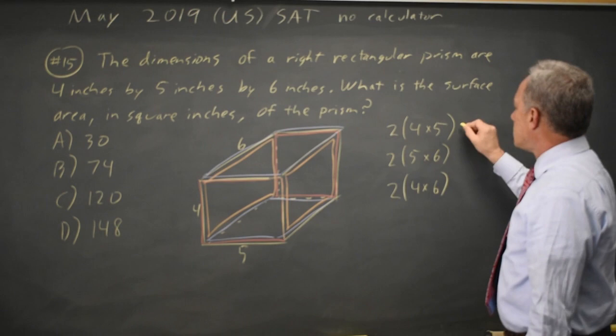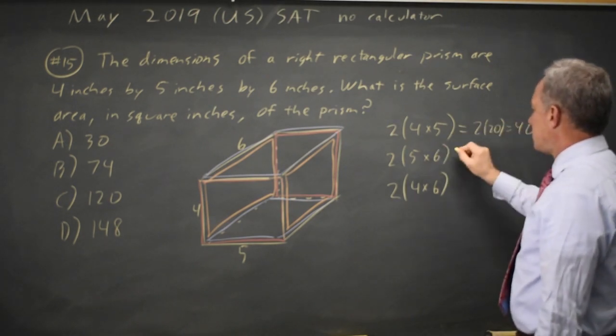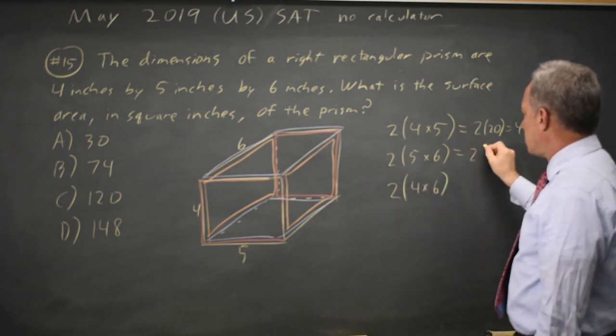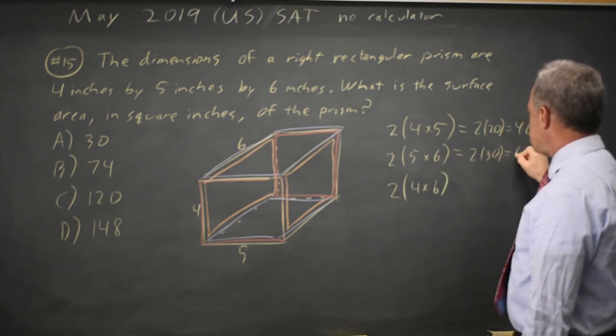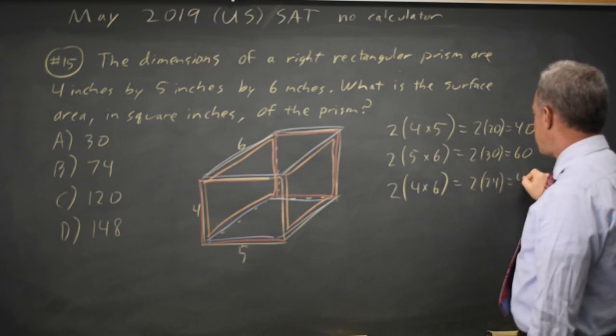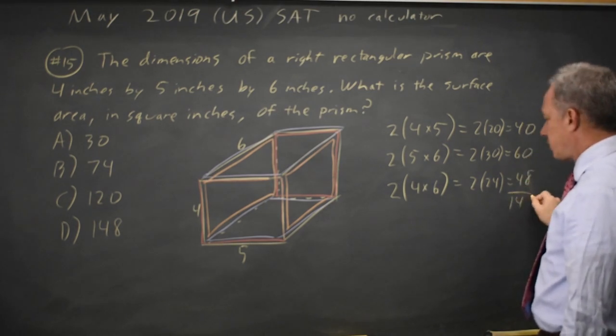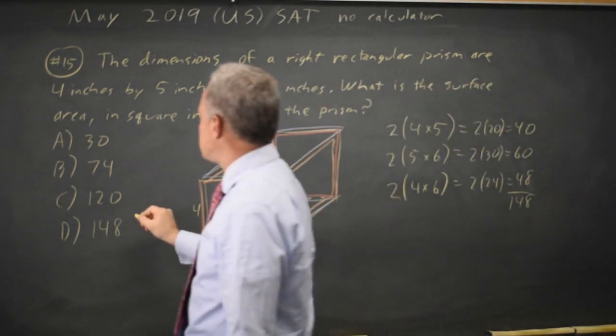So this would be twice 20 is 40. This would be twice 30 is 60. And this would be twice 24, which is 48. And if I add them, 40 plus 60 is 100, plus 48 is 148, which would be choice D.